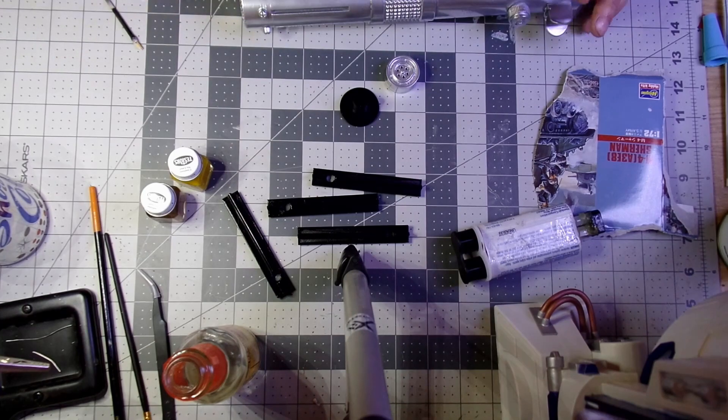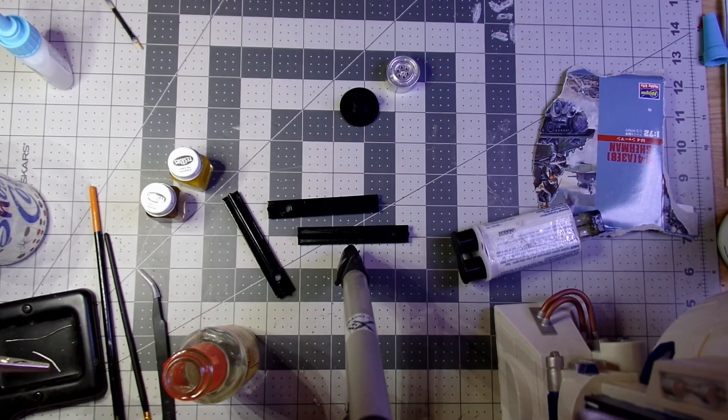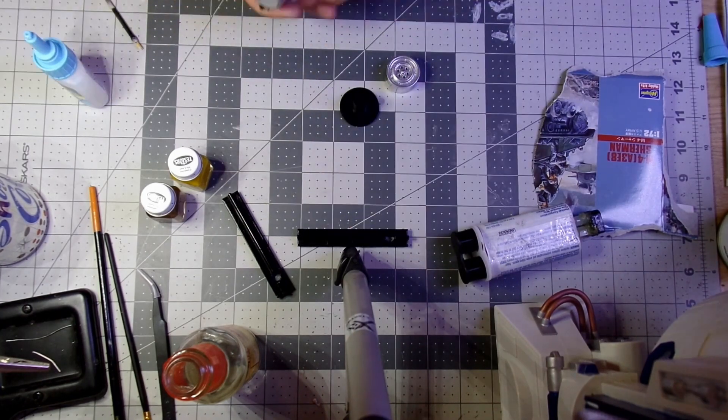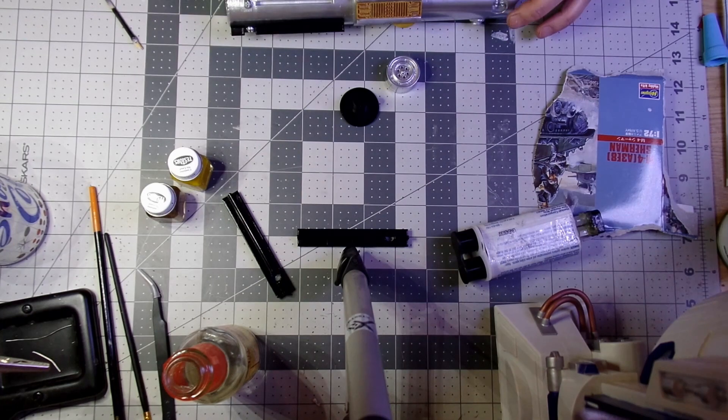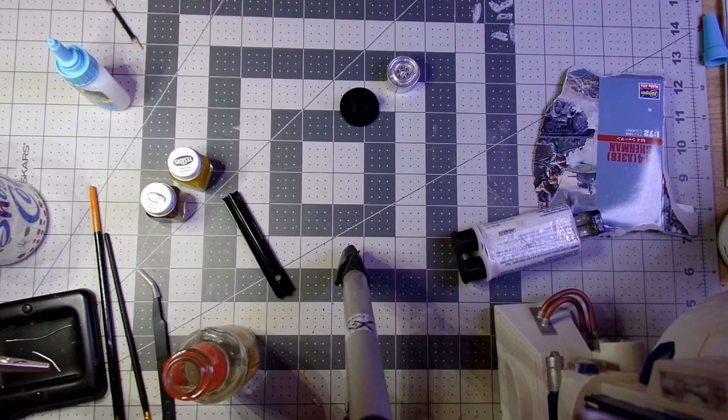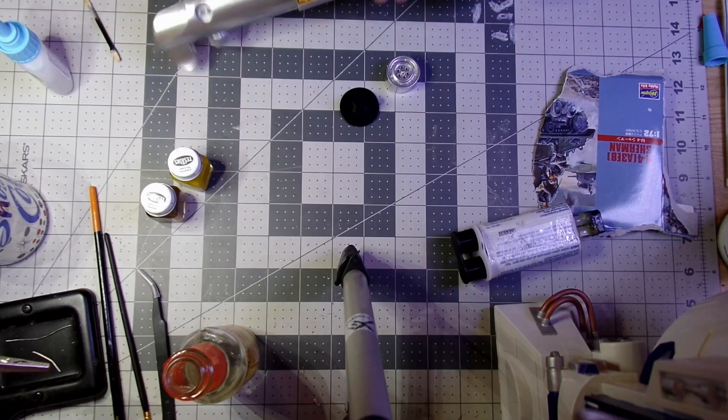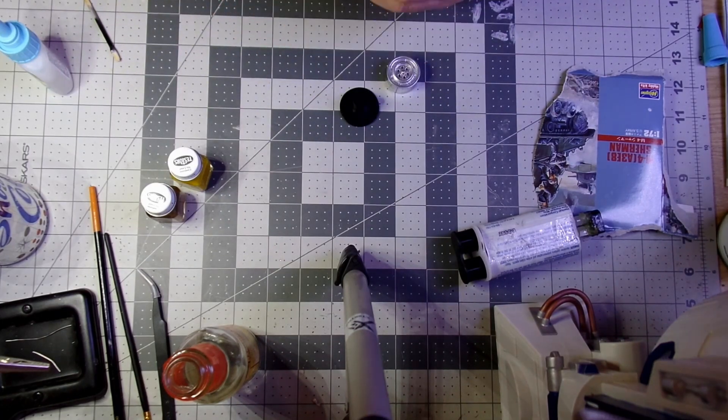And the pommel inserts in the emitter stand are towards the center of the shot. And those I painted gloss black, or semi-gloss black. And I'm just gluing it together with a little super glue and some 5-minute epoxy.